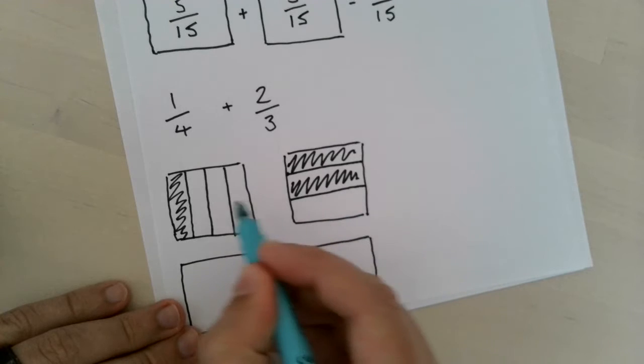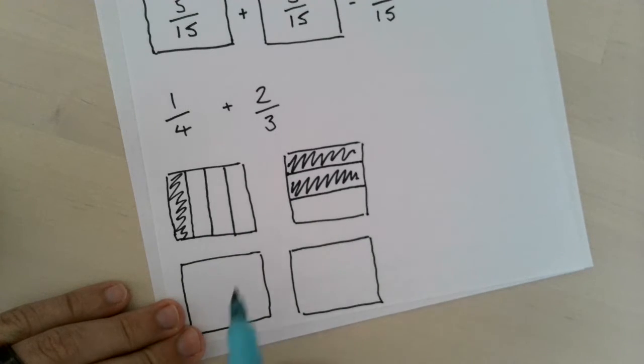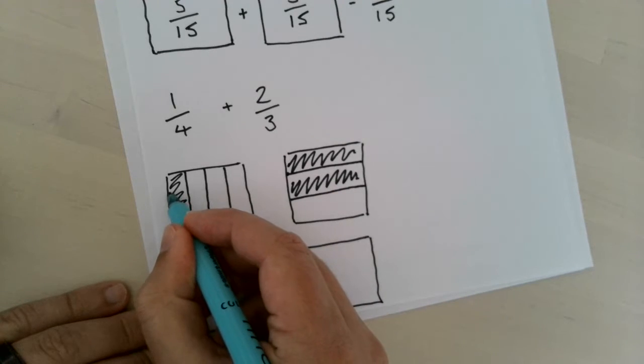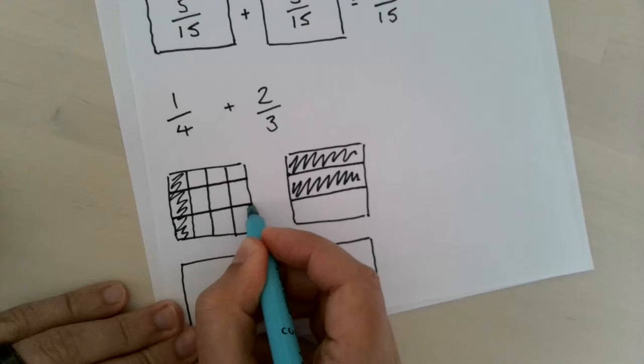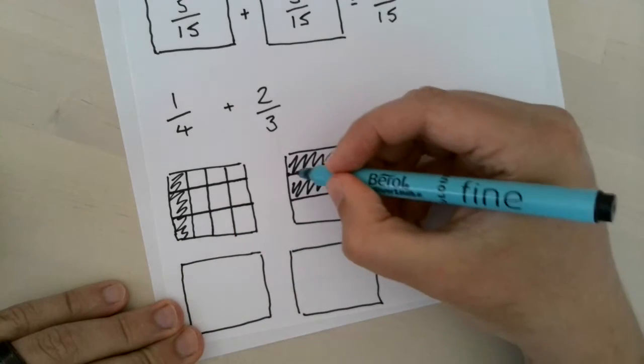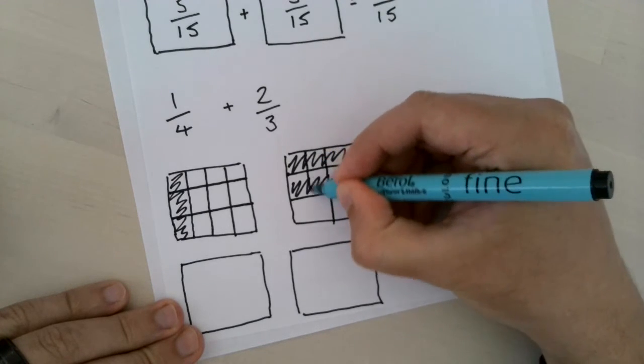The parts should be equal but just for the purposes of this drawing they're not. So I'm now going to make this the same and this the same, so we've got the same amount of parts in each shape. I'm going to split that into thirds, and I'm going to split this into quarters, so half and then half again.